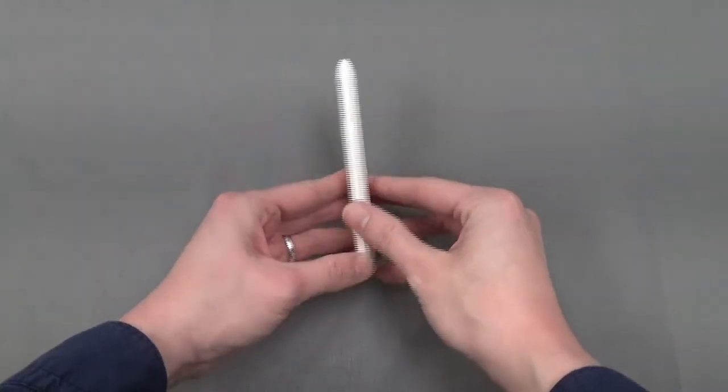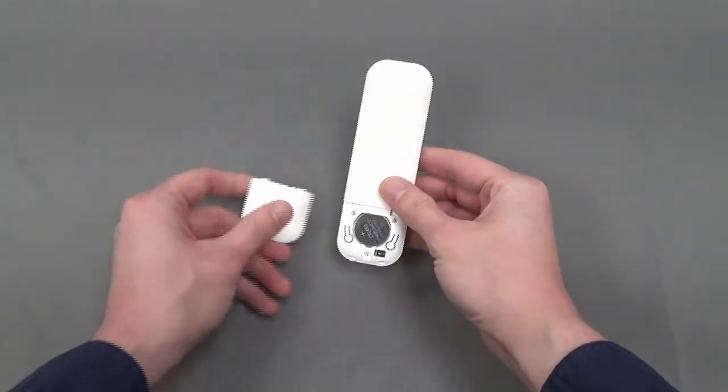Next, turn your remote over, remove the battery cover, and locate the P2 button.